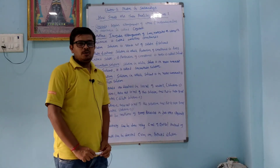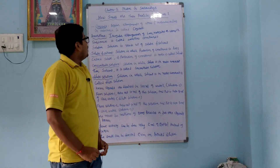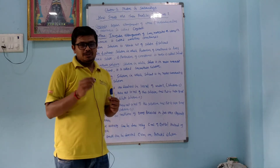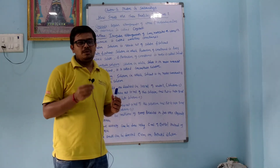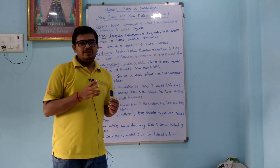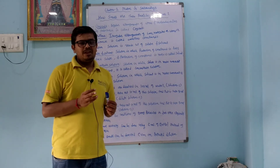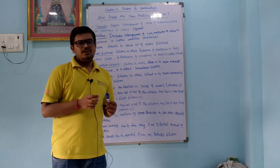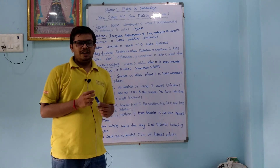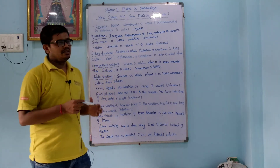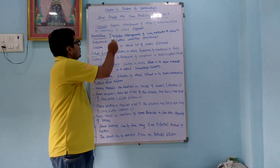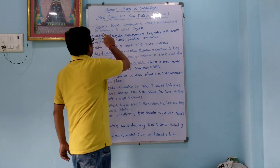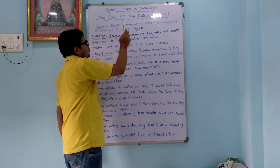Now we will learn how small the particles of matter are. When we take a small amount of matter, millions of particles are present. First, let us learn about crystals: a regular arrangement of atoms, molecules, or ions in a substance is called a crystal.